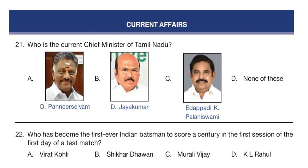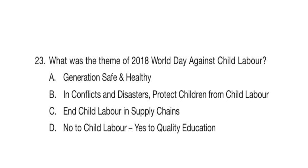Next section is Current Affairs. Question 21. Who is the current Chief Minister of Tamil Nadu? The answer is option C: Edappadi K. Palaniswami. Question 22. Who has become the first ever Indian batsman to score a century in the first session of the first day of a test match? The answer is option B: Shikhar Dhawan. Question 23. What was the theme of 2018 World Day Against Child Labour? The answer is: Generation Safe and Healthy.